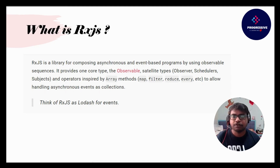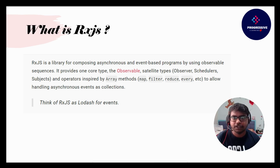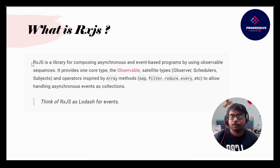So what is RxJS? Here is the definition from the RxJS website. Let's go through the complete definition and then we'll break down each sentence. RxJS is a library for composing asynchronous and event-based programs by using observable sequences. It provides one core type — the observable — and satellite types: observable, scheduler, and subjects. There are a lot of operators inspired by array methods to allow handling asynchronous events as collections. Think of RxJS as a Lodash for events. Lodash is a utility library widely used in the community.